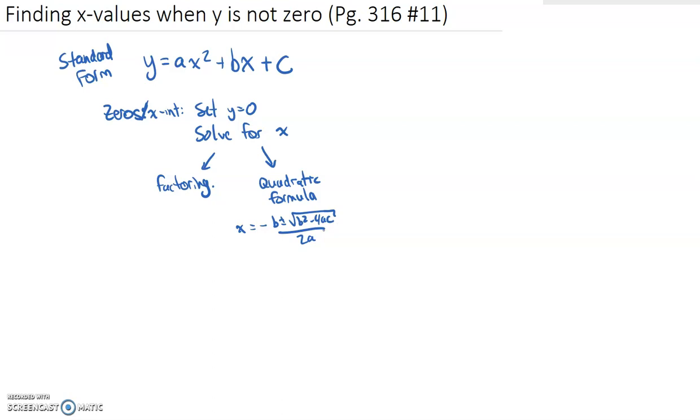And so those are the two ways we could solve those. And this will always work provided that there are zeros or x-intercepts. Now what do we do if we're not asked to find the x-intercepts? If instead we're given y is some other value, but we're to find the x values when y is that other value.